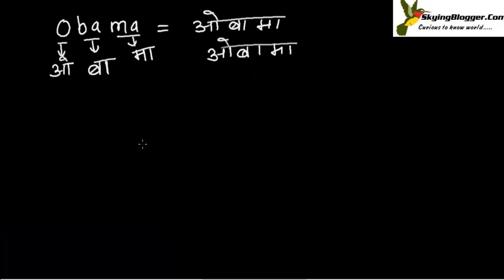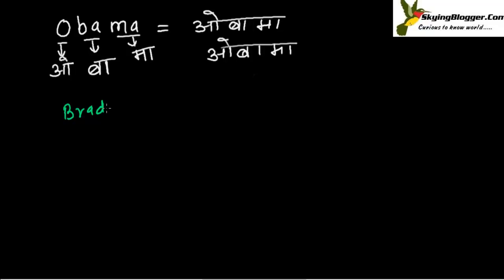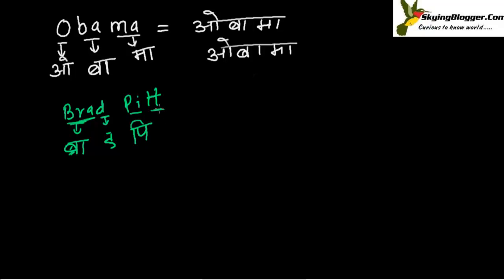Next, let me write Brad Pitt. B-R-A-D, Brad Pitt. So we write 'bra' and then 'brad' — it's 'bra' with an added sound to make 'brad.' Then for 'Pitt,' since 'i' is a short 'e' sound, it's 'pa' and then the double-T becomes a half 'ta.'